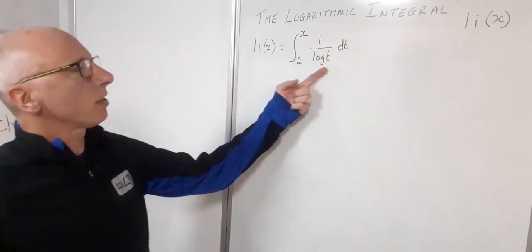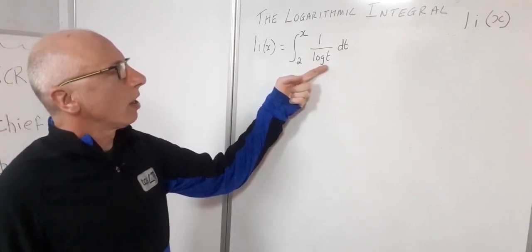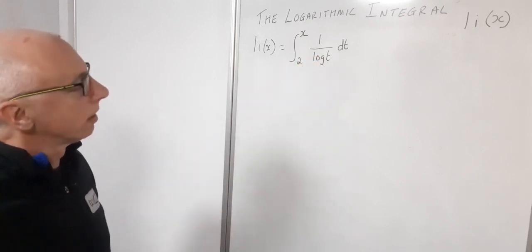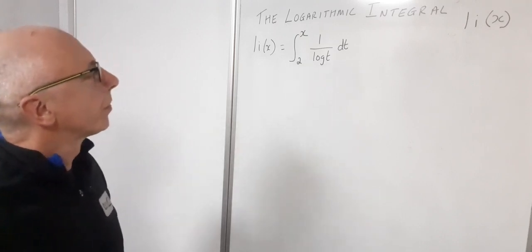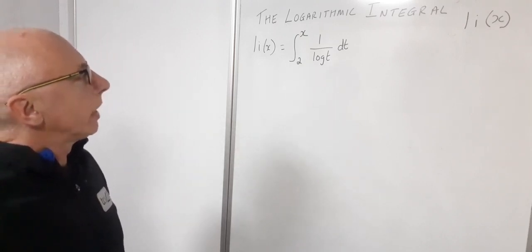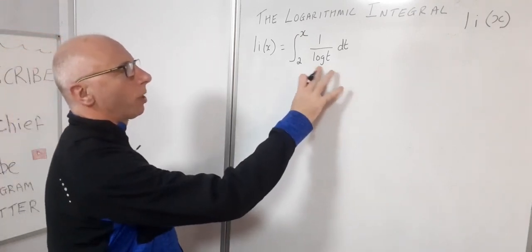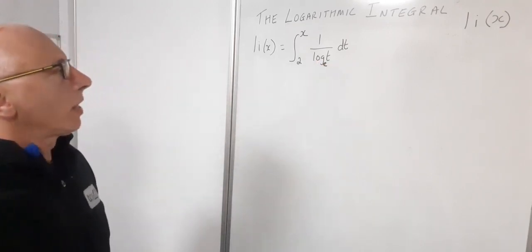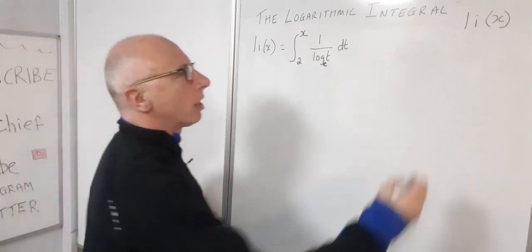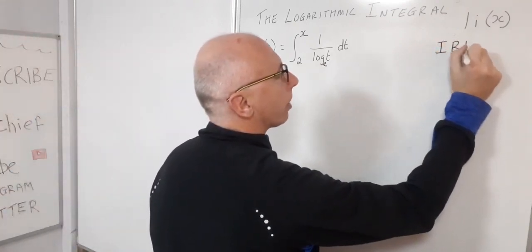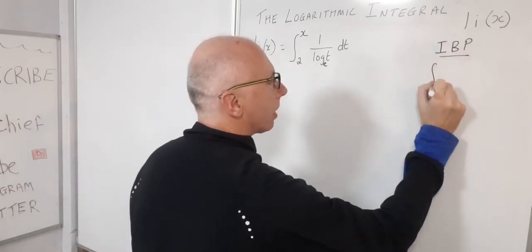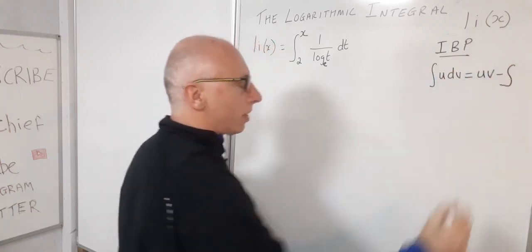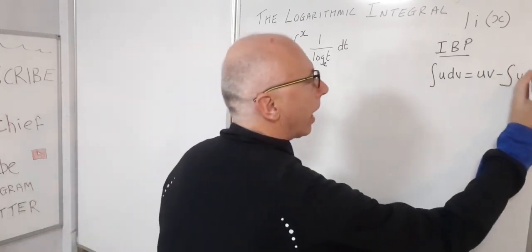Integrating this causes many problems. We know that if we integrate log(t) without the reciprocal we can do that in calculus one classes, but the reciprocal of it causes issues. To handle it we need integration by parts. The formula for integration by parts is: the integral of u dv equals uv minus the integral of v du.